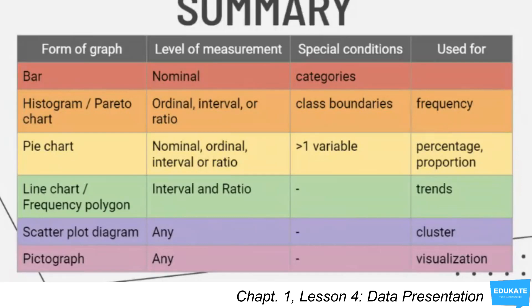Next, you have the pie chart. The level of measurement used is for all levels of measurements: nominal, ordinal, interval, and ratio. Your special condition should be more than one variable. You cannot have a pie chart with just one variable, and it's used for percentage or for showing proportion or parts. Next, you have the line chart or frequency polygon. Your level of measurement should be interval and ratio. There is no special conditions in these, and it's used to show trends or patterns which can easily be seen in the data.